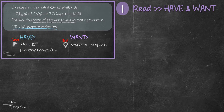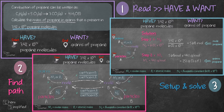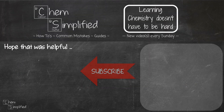To recap, we start off by reading the question and figuring out the information that we have and what the question wants us to find. Then we use the plan to figure out the pathway we need to use. And once we've got that sorted out, we follow the setup and solve the problem. Following these three steps makes solving stoichiometry problems very easy. For more examples, watch out for more videos in this stoichiometry 101 series. Hope the video was helpful — do subscribe and thanks for watching.